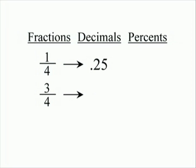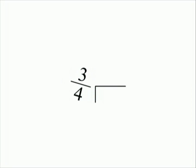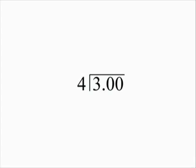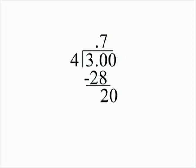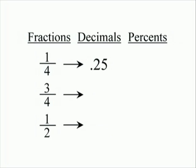Now let's change three-quarters. To change three-quarters into a decimal, we must divide four into three. Write the three as a decimal number and carry it out to two places. Place the decimal point in the answer directly above the decimal point in your problem and start dividing. Four divides into thirty at most seven times with a remainder of two. Bring down the remaining zero: four divides into twenty exactly five times with no remainder. We've just turned the fraction three-quarters into the decimal seventy-five hundredths.